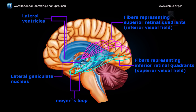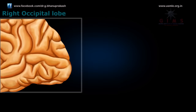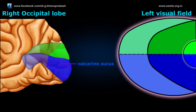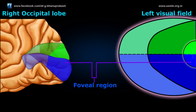Axons carrying information about the inferior portion of the visual field travel in the parietal lobe. The topographic order of visual information is maintained in the visual cortex. The fovea is represented in the posterior part of the visual cortex, whereas more peripheral regions of the retina are represented in progressively more anterior regions. Note that the area of central vision, the fovea, is represented over an especially large part of the visual cortex.